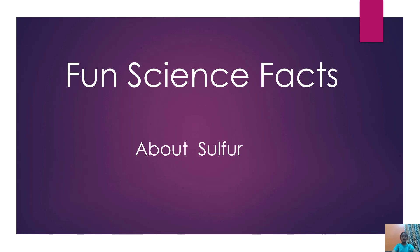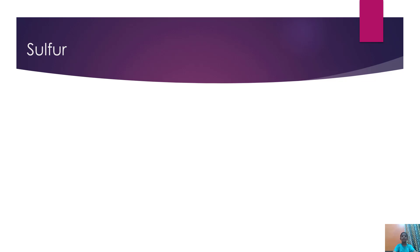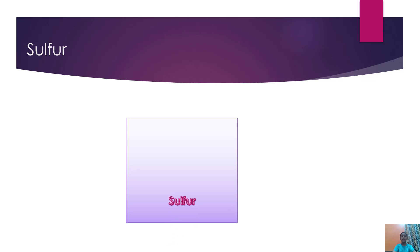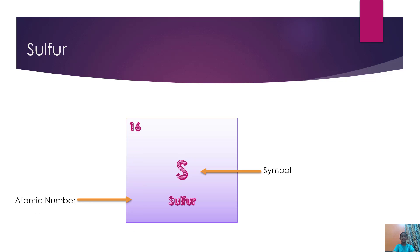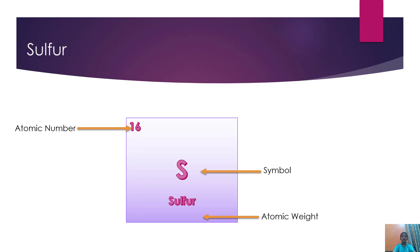Hello guys, today we are going to discuss some fun science facts about Sulfur. As we discuss the element Sulfur, S is the symbol for it, with 16 as its atomic number and its atomic weight as 32.006.